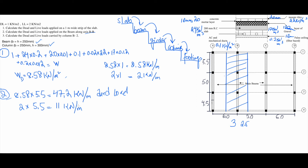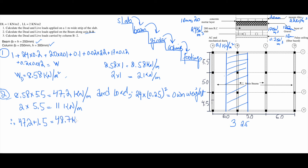But we also need to add the beam's own weight to the dead load. The beam self-weight is: 24 (density) × 0.25 × 0.25 (section) = 1.5 kilonewton per meter. So the total dead load on the beam is 47.2 + 1.5 = 48.7 kilonewton per meter.